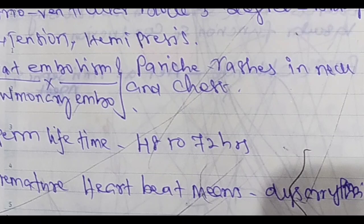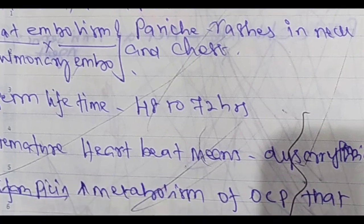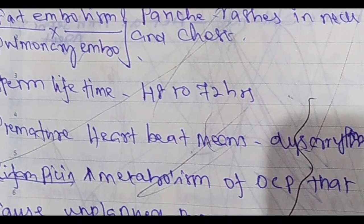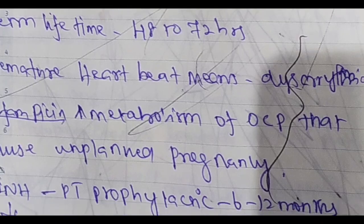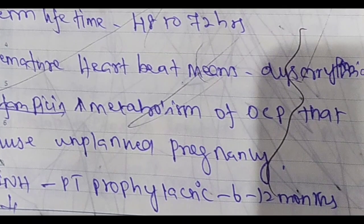Petechiae rashes in the neck and chest. Sperm lifetime: 42 to 72 hours. Premature heartbeat — dysrhythmia. Note: petechiae rashes on the neck and chest are a key sign, and premature heartbeat, i.e., dysrhythmia, is also seen.